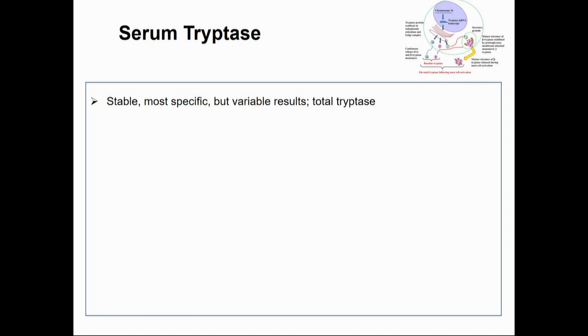We don't think we should be solely focusing on serum tryptase. The reason people do is that it is the most stable and most easily accessible test. But you do get variable results, and you're only looking at a total tryptase. In my mastocytosis patients, often they've got levels greater than 200 but may have very little in the way of symptoms, whereas those with lower levels but a defined diagnosis may have more symptoms. So it isn't the complete answer.